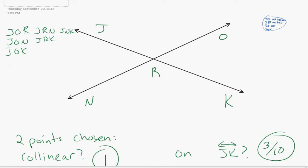Now I'll go do all the ones with O. O-R-N, O-R-K, O-N-K. So those are all the ones with J and all the ones with O. Then R-N-K. Nothing left.